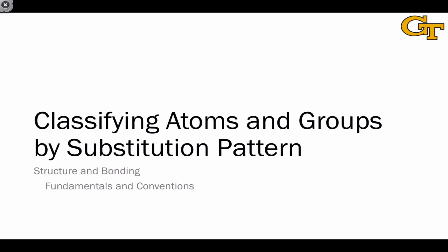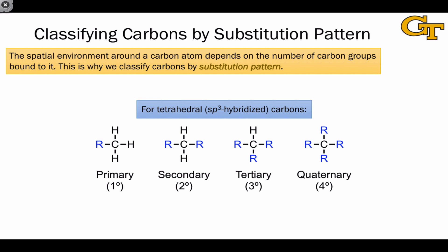In this video, we're going to discuss classifying atoms and groups by what's called their substitution pattern. This is a really important classification scheme for carbons in organic structures because the substitution pattern affects reactivity. Specifically, the spatial environment around a carbon atom is affected by its substitution pattern. Substitution pattern is really just a fancy term for the number of carbon groups around a carbon atom.